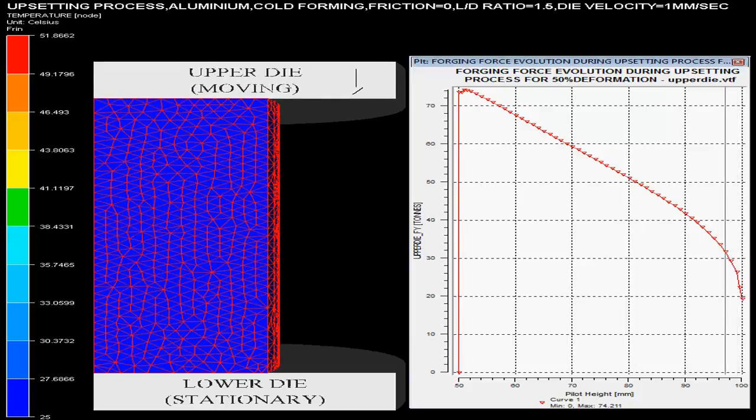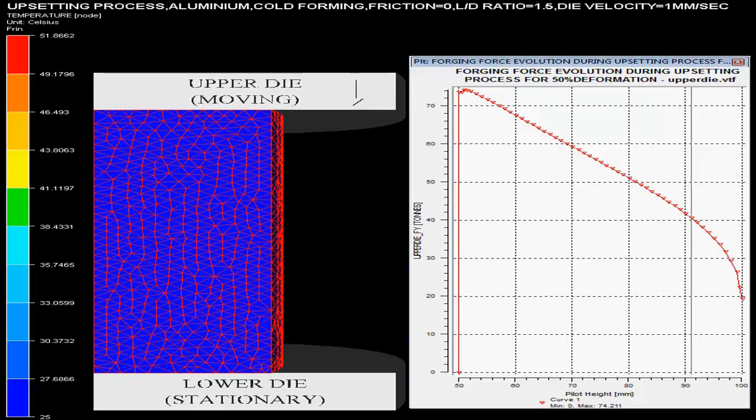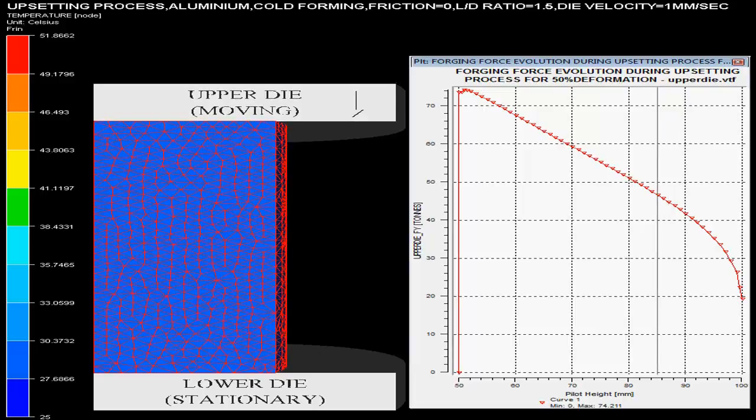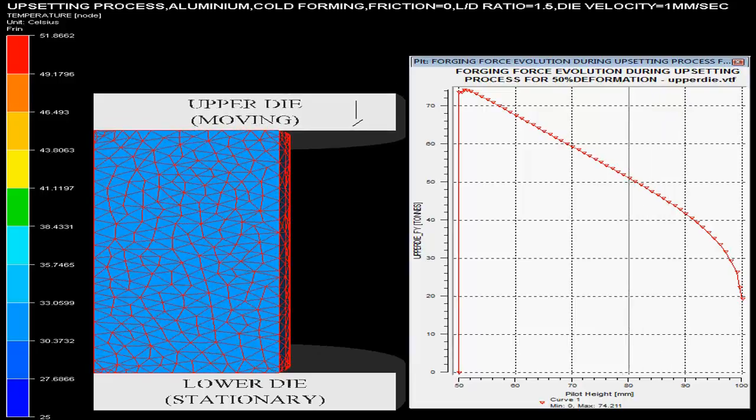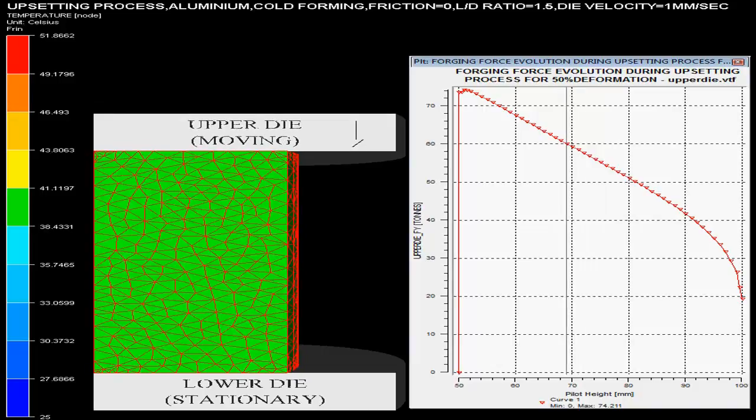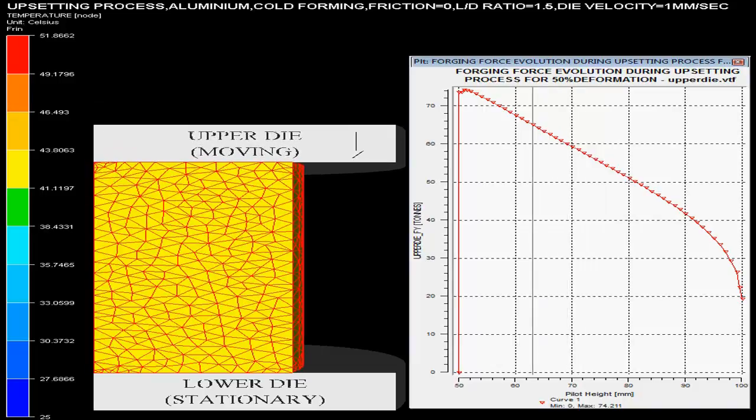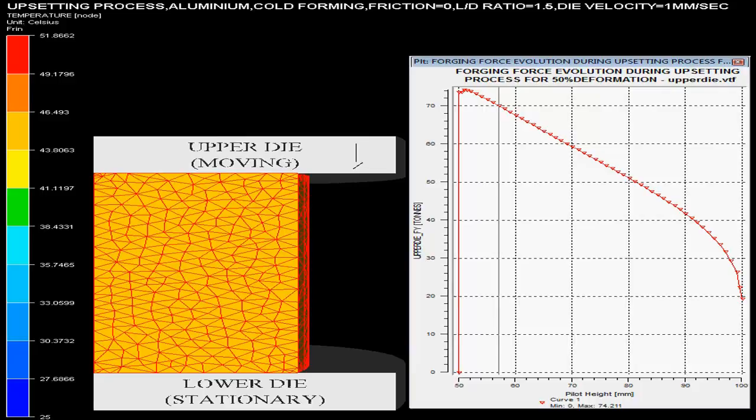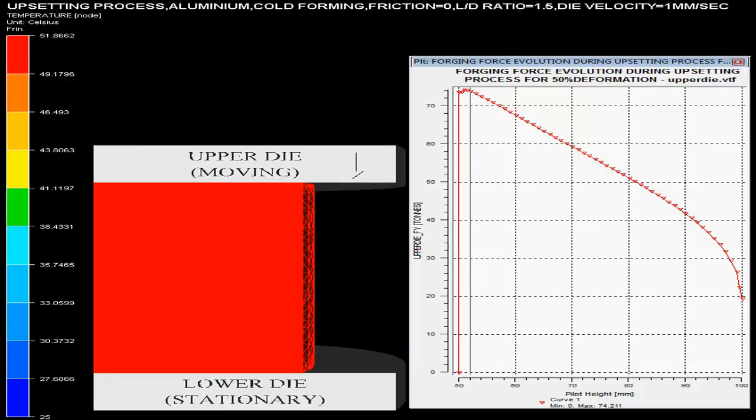The video shows the upsetting operation taking place using mechanical press. The initial billet of aluminum having L by D ratio equal to 1.5 is taken cold. Zero friction for billet and dies is shown on the top end in the video.